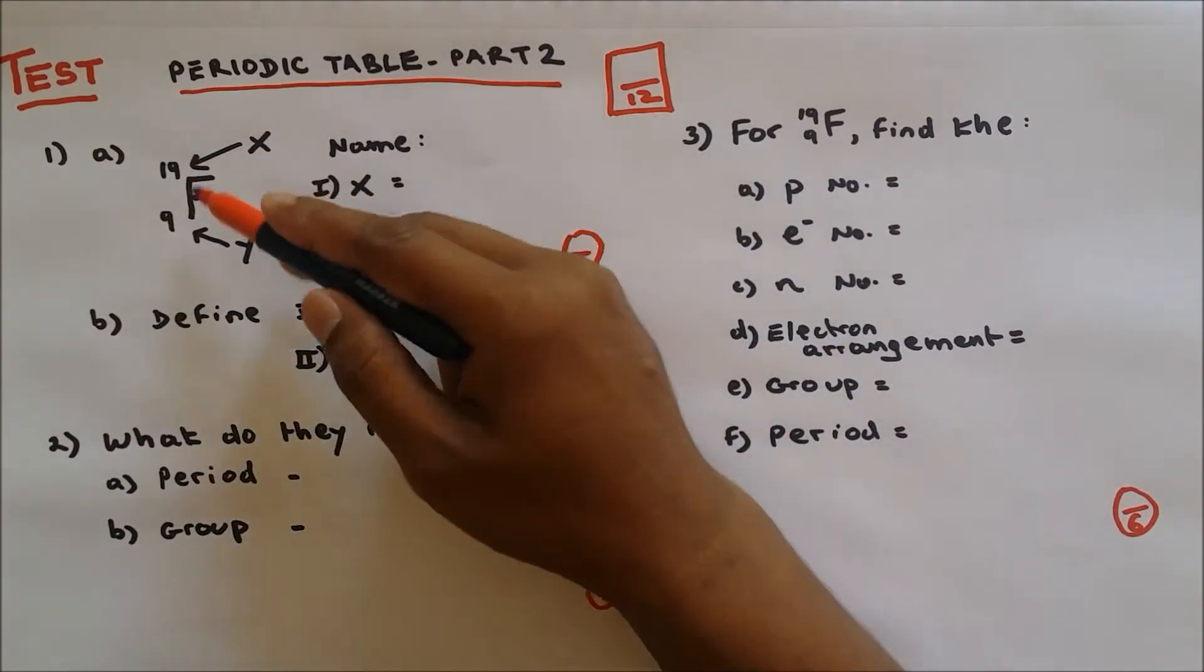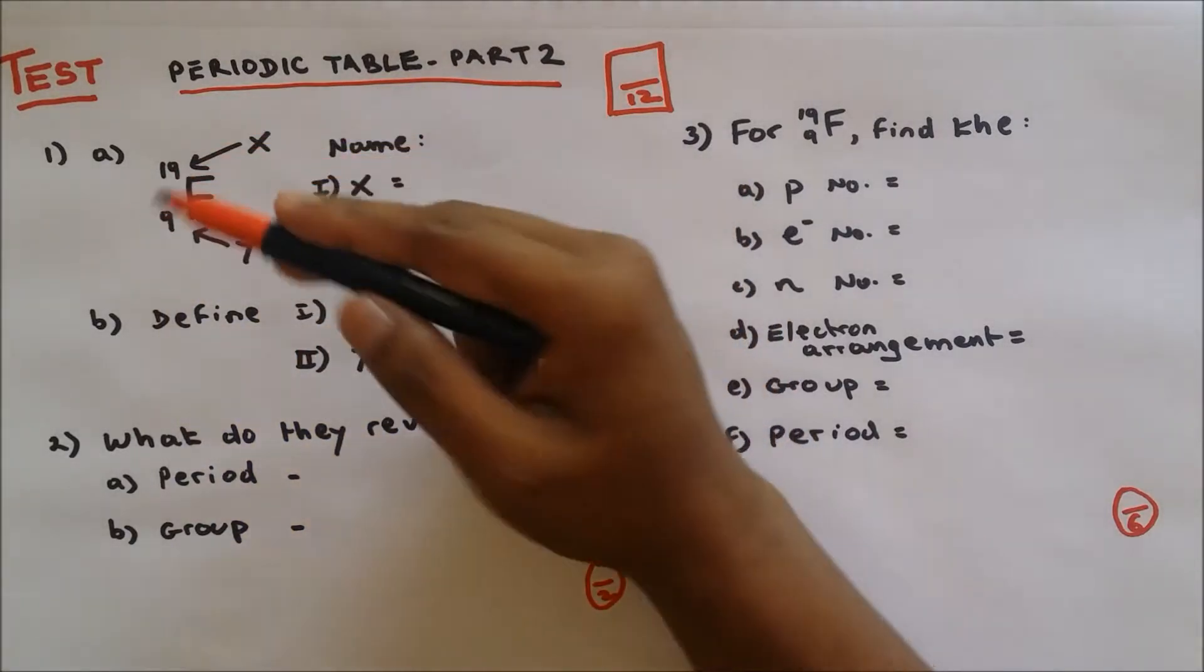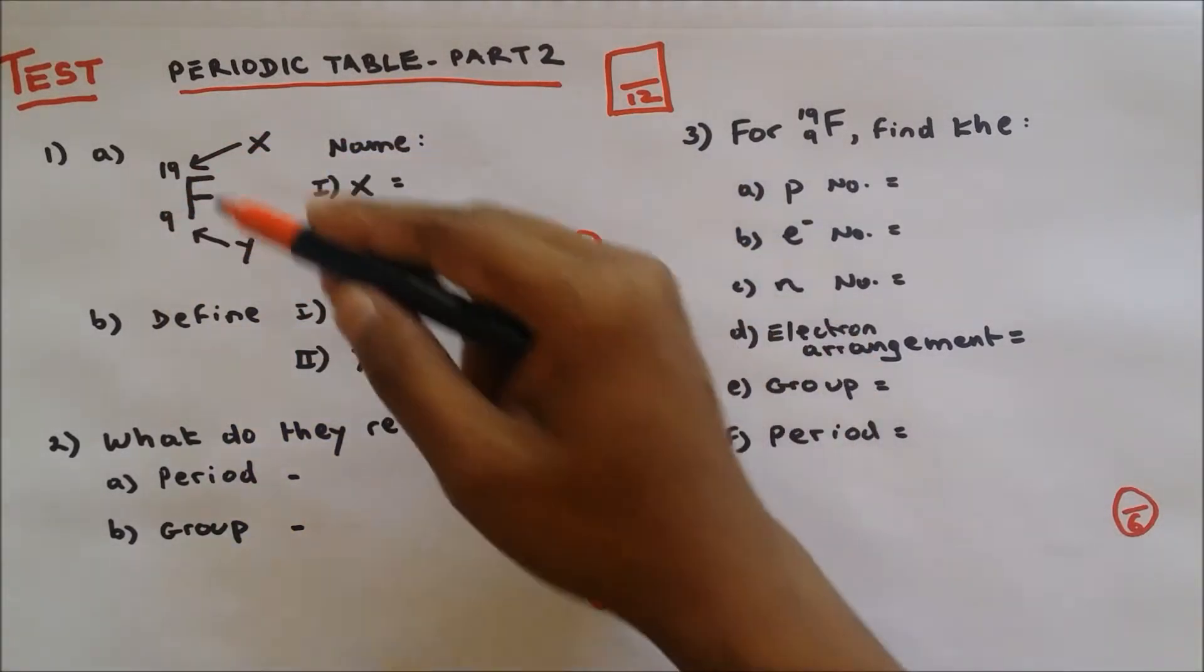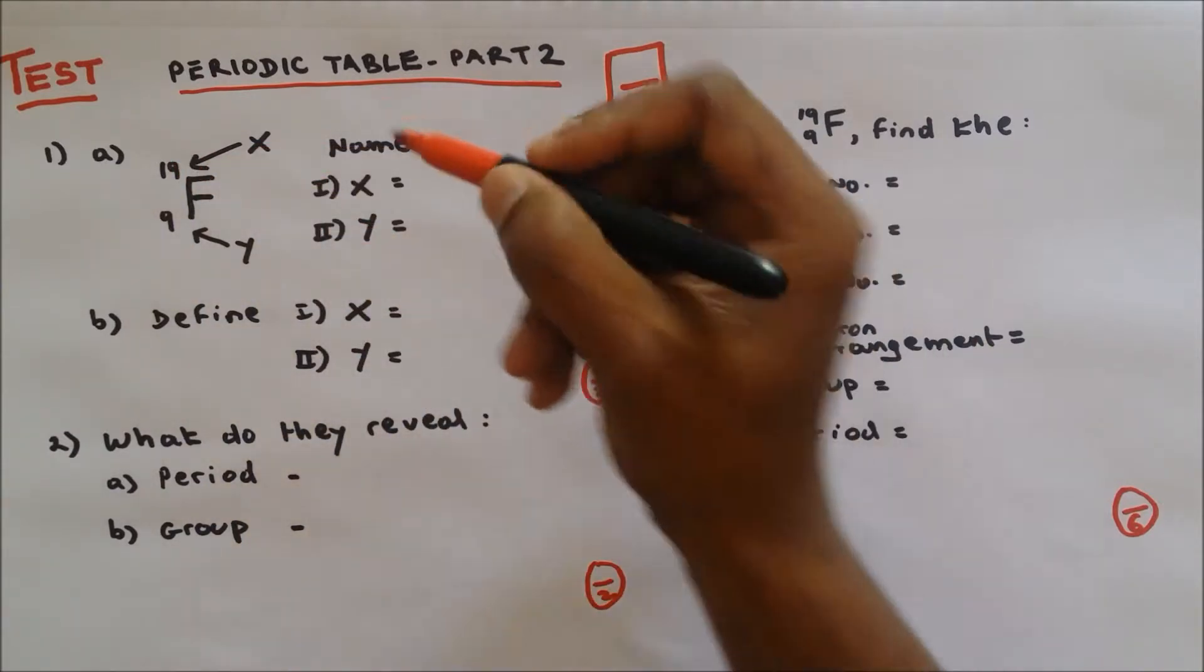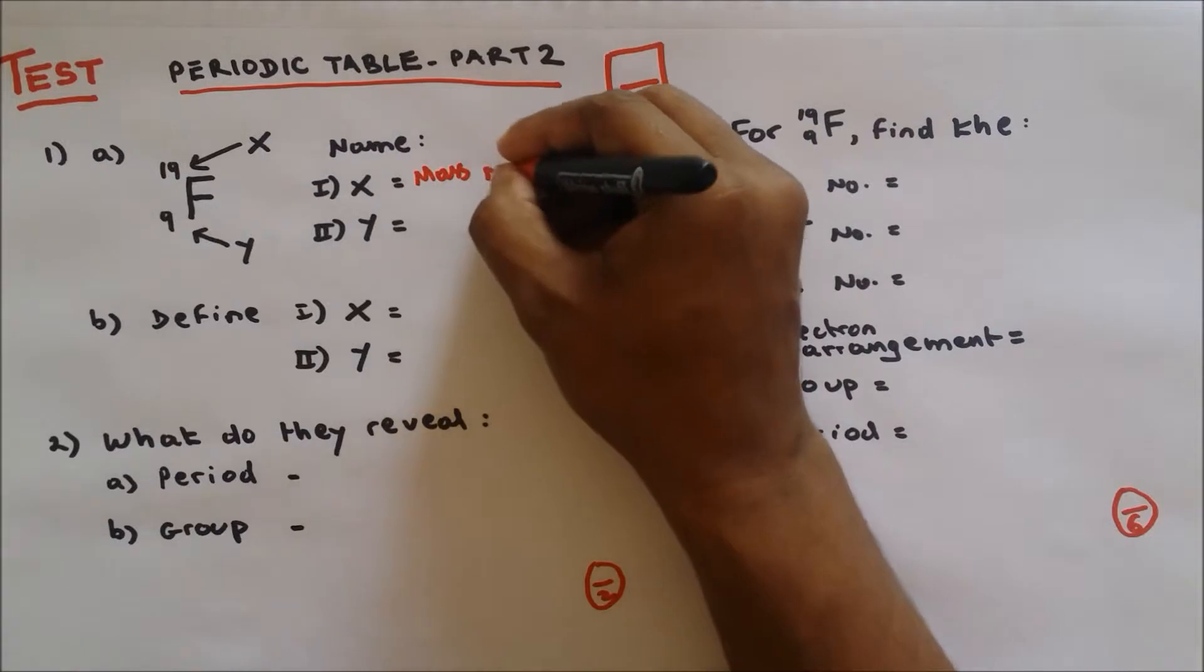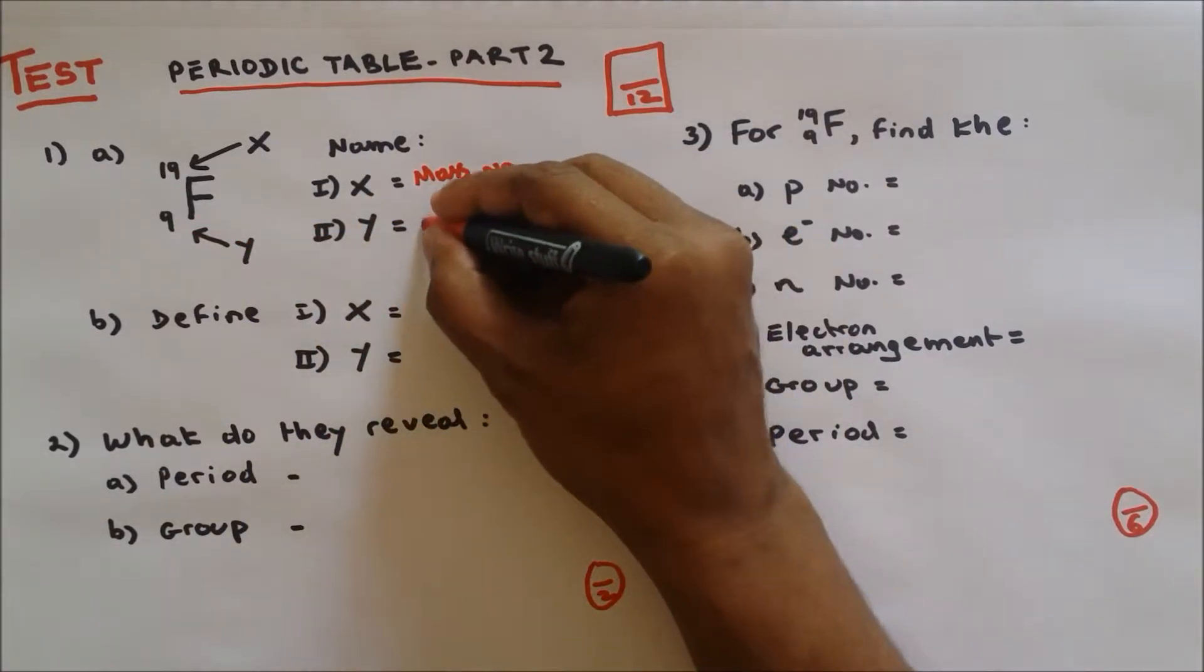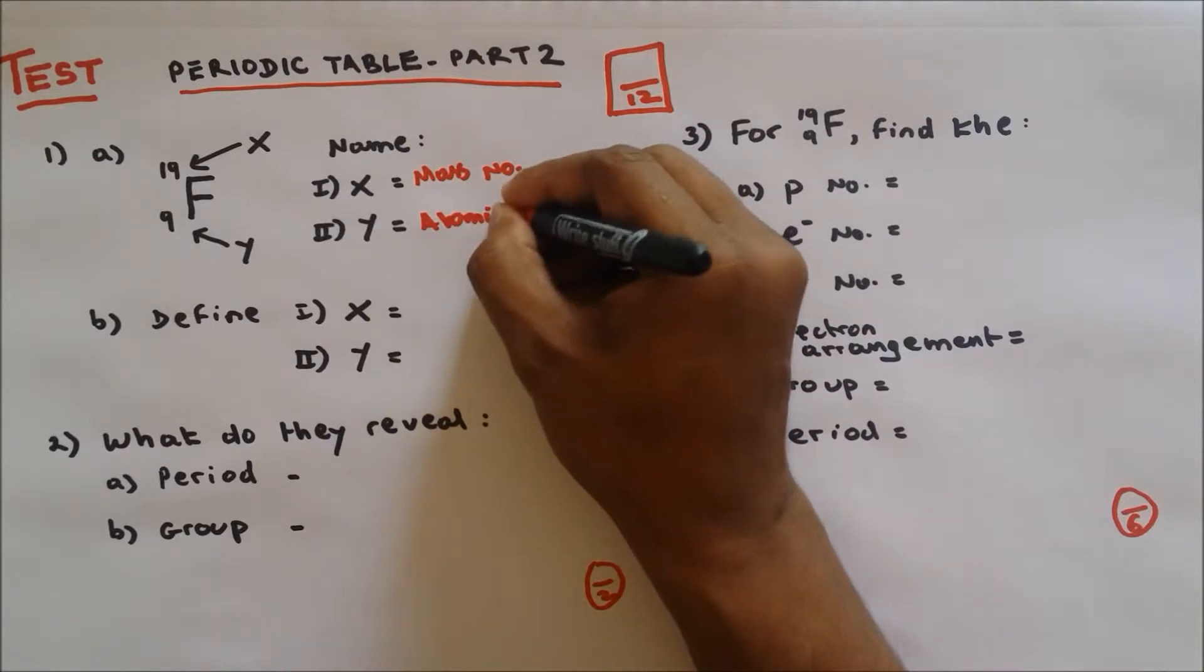Question number one part a. This is fluorine. On the top number we have 19, the bottom number is 9. The bigger number is called X, so X is called mass number. The smaller number which is Y is called atomic number. Two marks, if you got two out of two, well done.